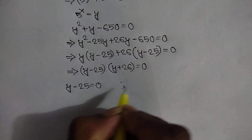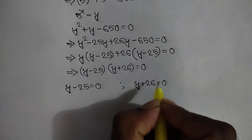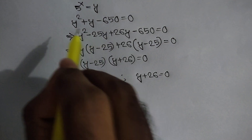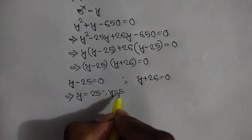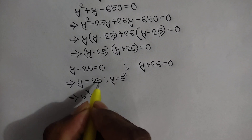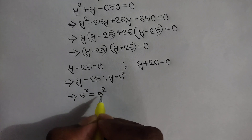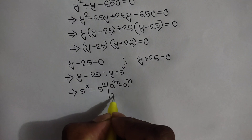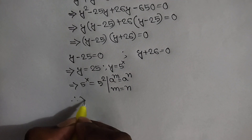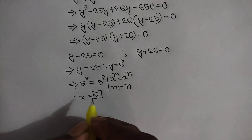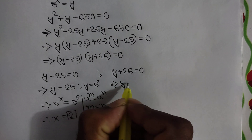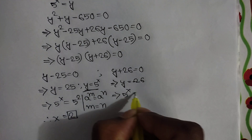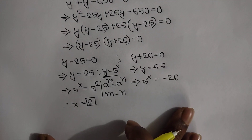Now we can take common (y minus 25)(y plus 26) is equal to 0. So y minus 25 equals 0 or y plus 26 equals 0, giving y equals 25 or y equals negative 26. Since y equals 5 to the power x, we have 5 to the power x equals 25, which is 5 squared. Applying the rule a to the power m equals a to the power n implies m equals n, so x equals 2. For y equals negative 26, 5 to the power x equals negative 26 has no solution.